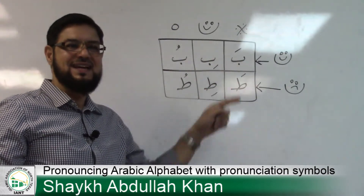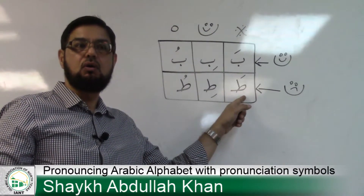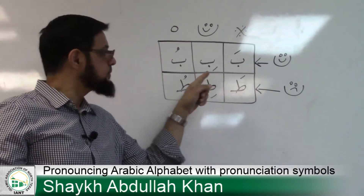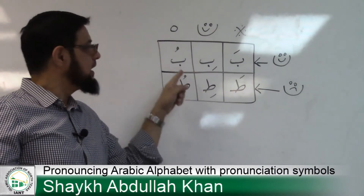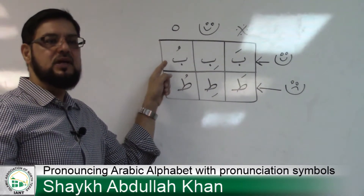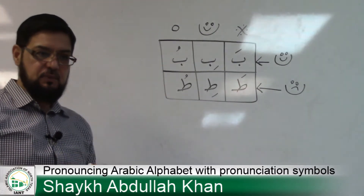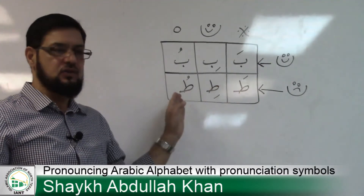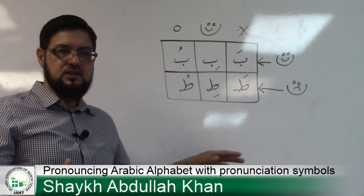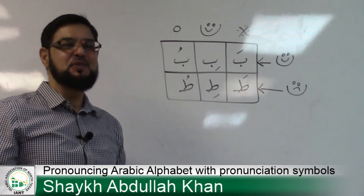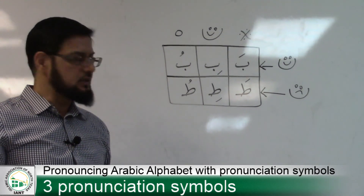For example: Ba with Fathah — 'Ba', we smile. A thick letter with Fathah — 'To', we don't smile. Ba with Kasra — 'Bi'. Thick letter with Kasra — 'Ti'. Dhammah: we make the lips round. Ba with Dhammah — 'Bu'. Thick letter with Dhammah — 'Tu'. The Quran is full of Fathah, Kasra, and Dhammah — whenever they come, we apply this chart. So this is the lesson of Haraka. Insha'Allah I will see you later.